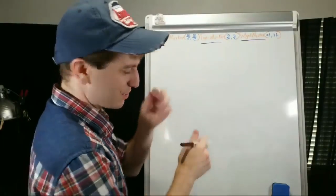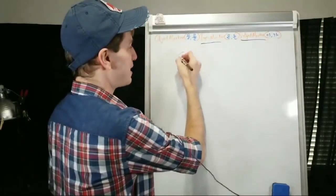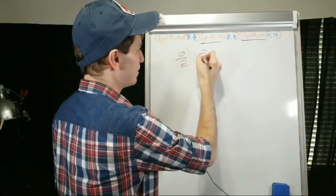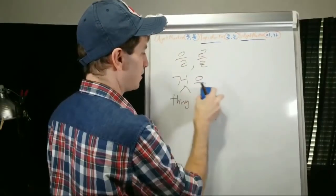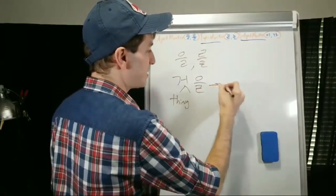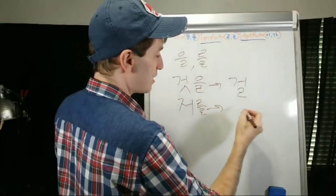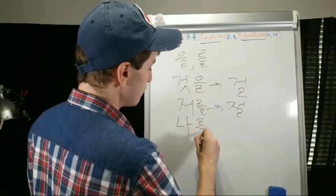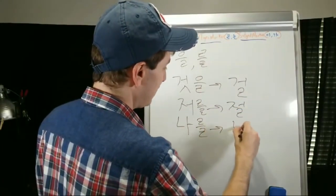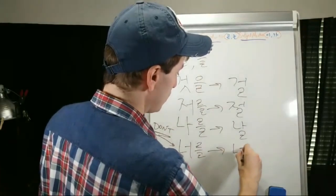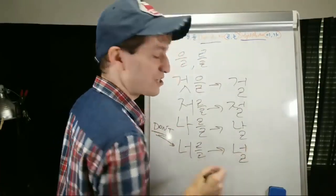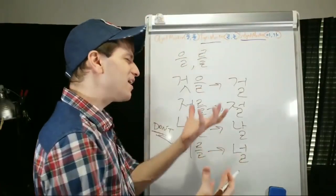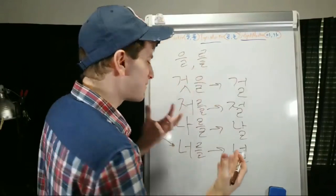Common contractions: the object marker is not always written as 을 or 를. 겉 with 을 becomes 걸. 저를 is sometimes written as 절, 나를 becomes 날, and 너를 becomes 널. You've probably seen love songs — 널 사랑해 and things like that.